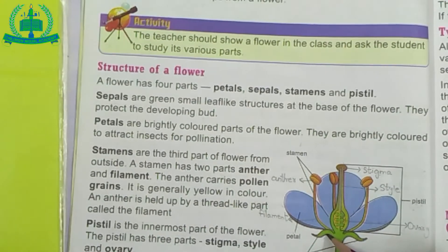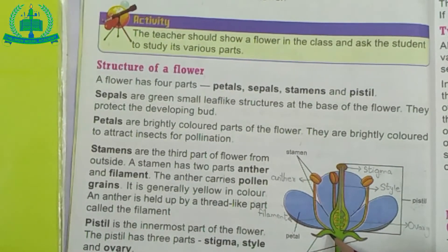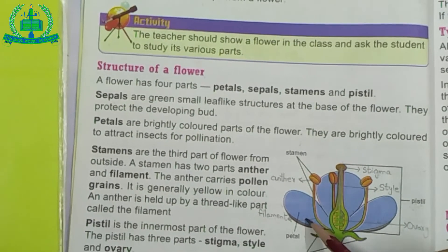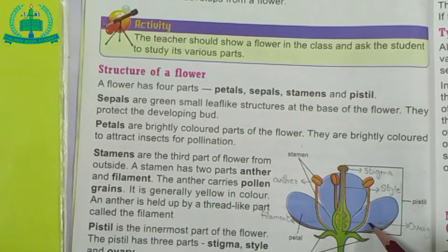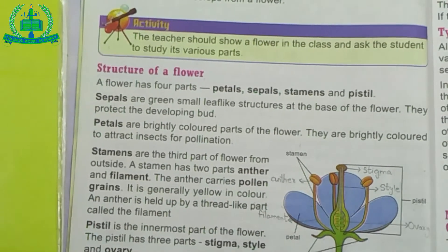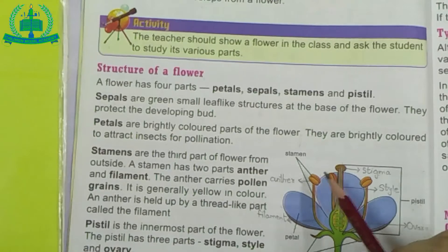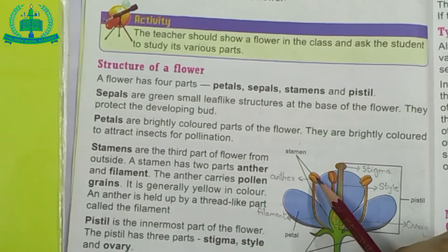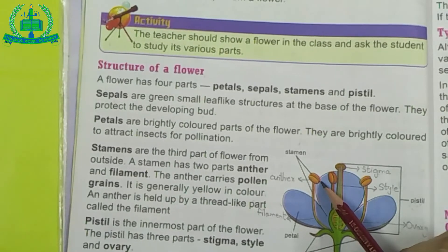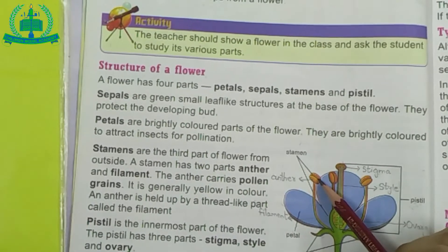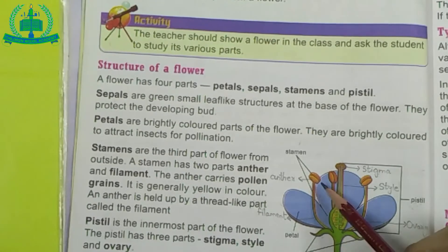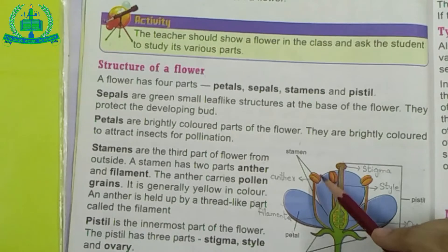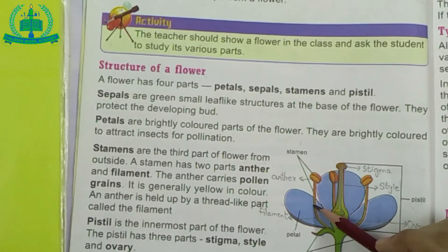The second part is Petals. What are petals? Petals are the colorful part of the flower. They attract insects for pollination. The third part is Stamen. What is stamen? This is the male reproductive part of a flower. Every stamen has two parts: anther and filament. The anther carries pollen grain, which is attached to the filament.